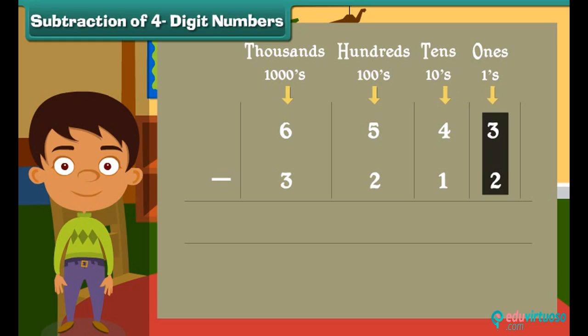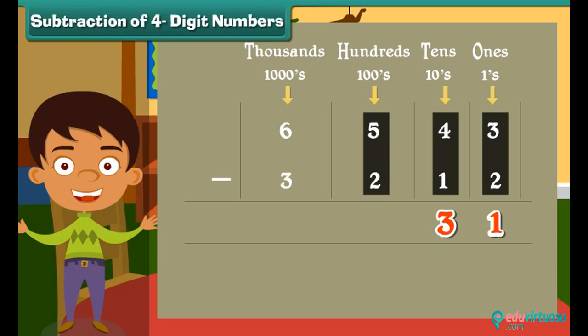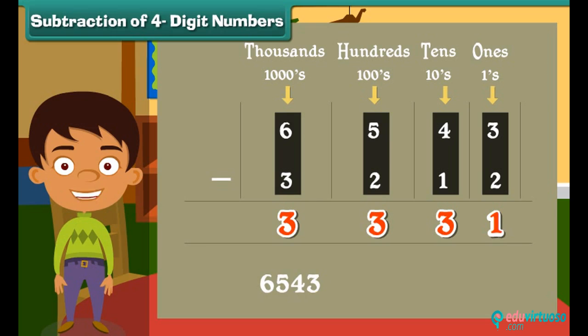3 minus 2 is equal to 1. Subtract tens: 4 minus 1 is equal to 3. Similarly subtract hundreds and thousands. 5 minus 2 is 3 and 6 minus 3 is 3. So 6543 minus 3212 is 3331.